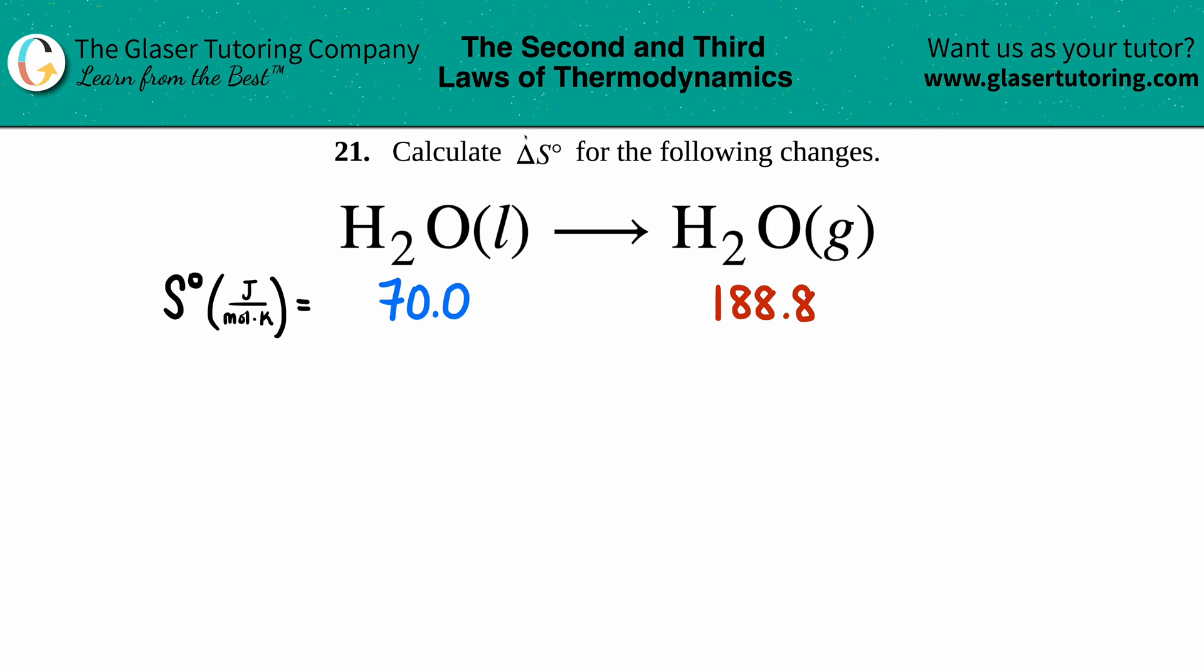Number 21, calculate the delta S naught for the following changes, and then we have H₂O liquid yields H₂O gas. Delta S—remember a delta triangle is change and S is entropy—so we're looking for that change in entropy.